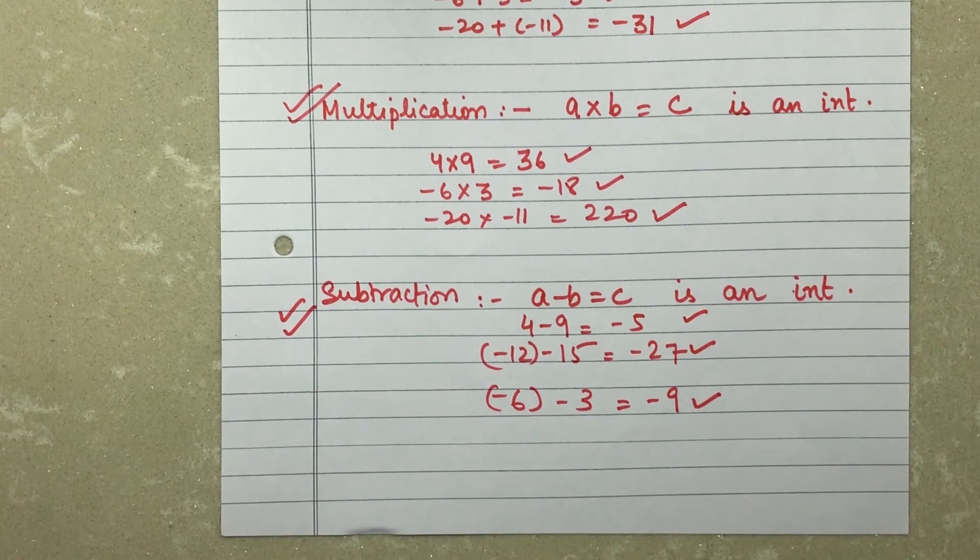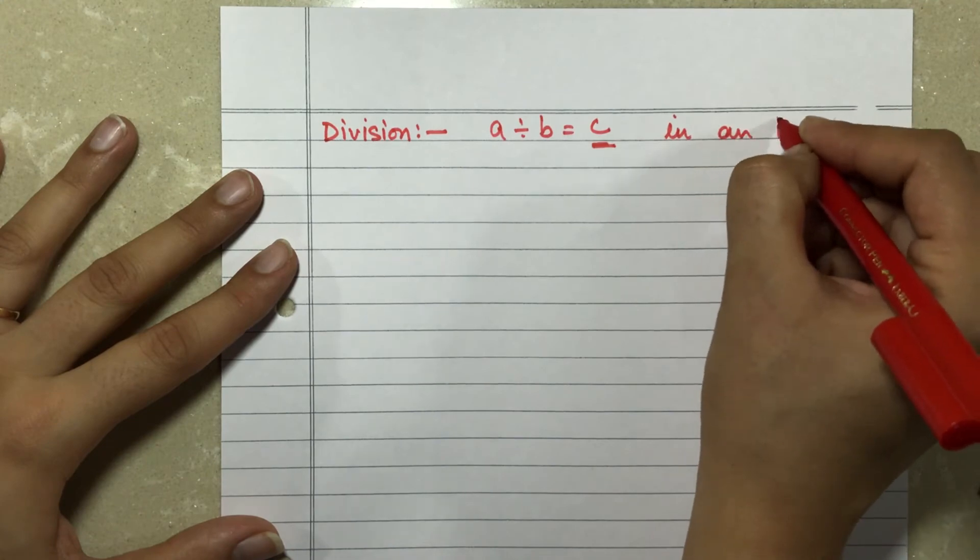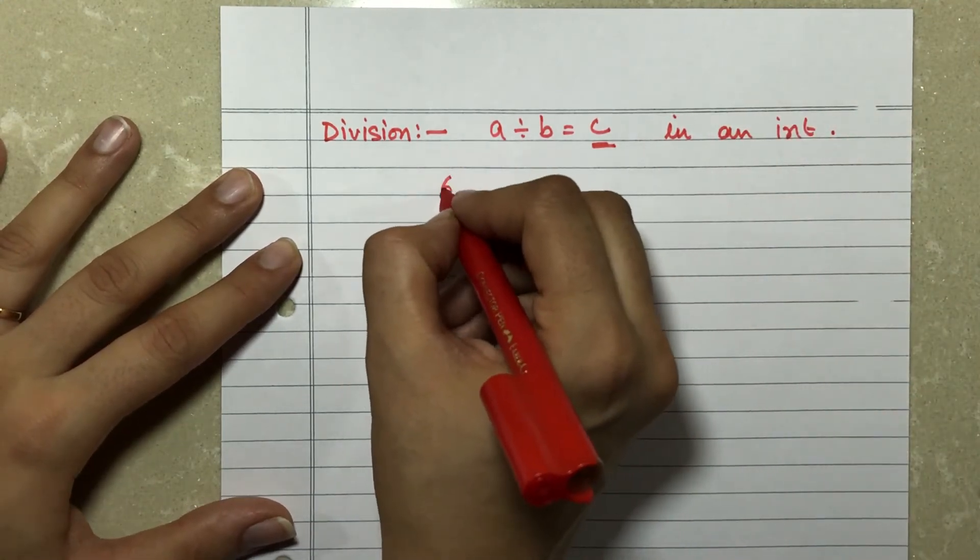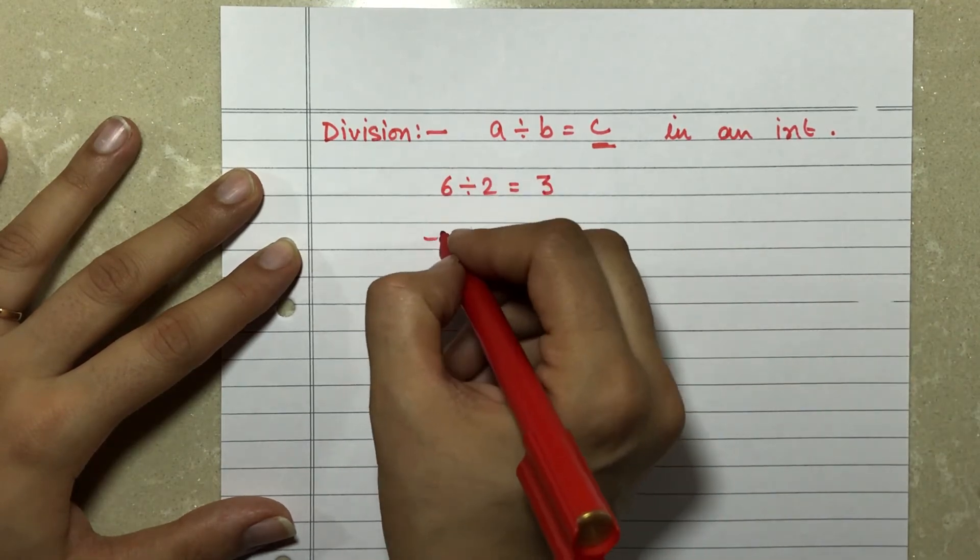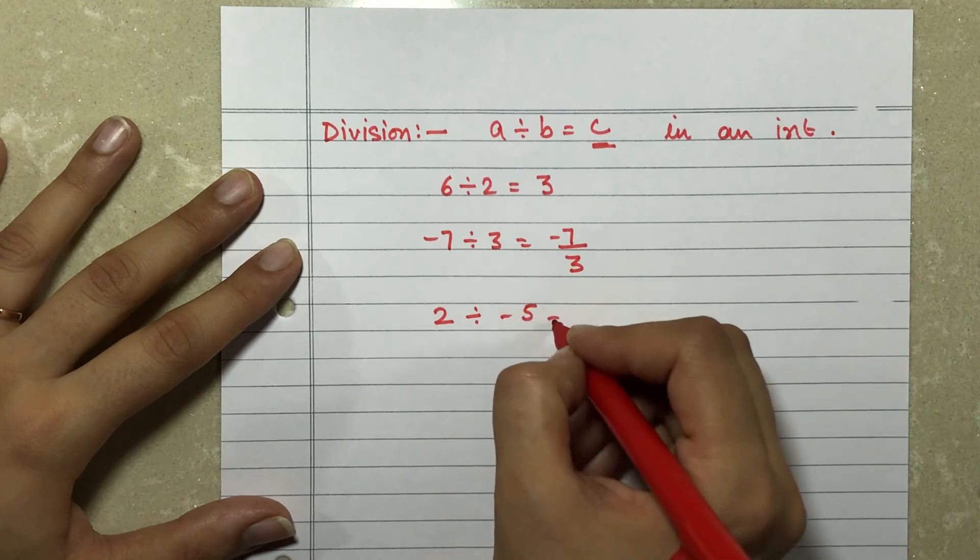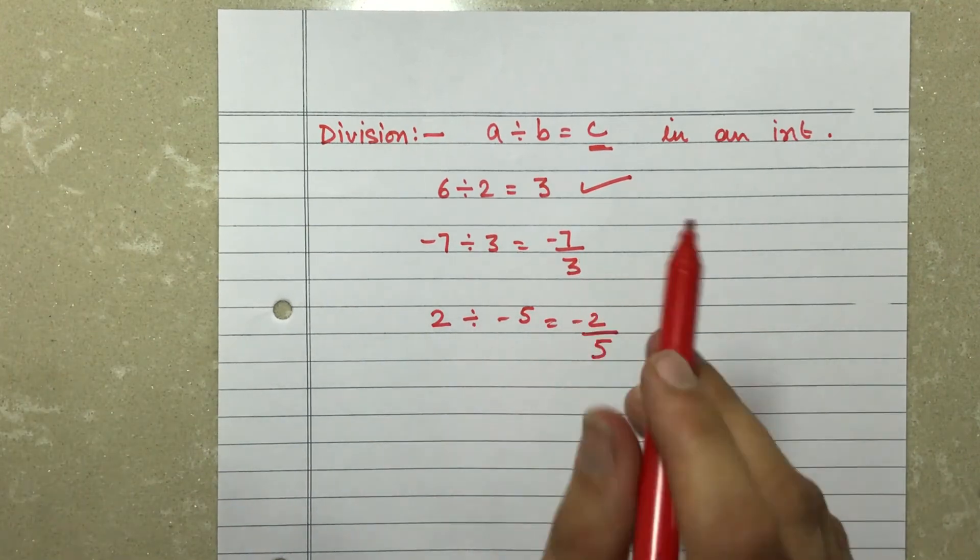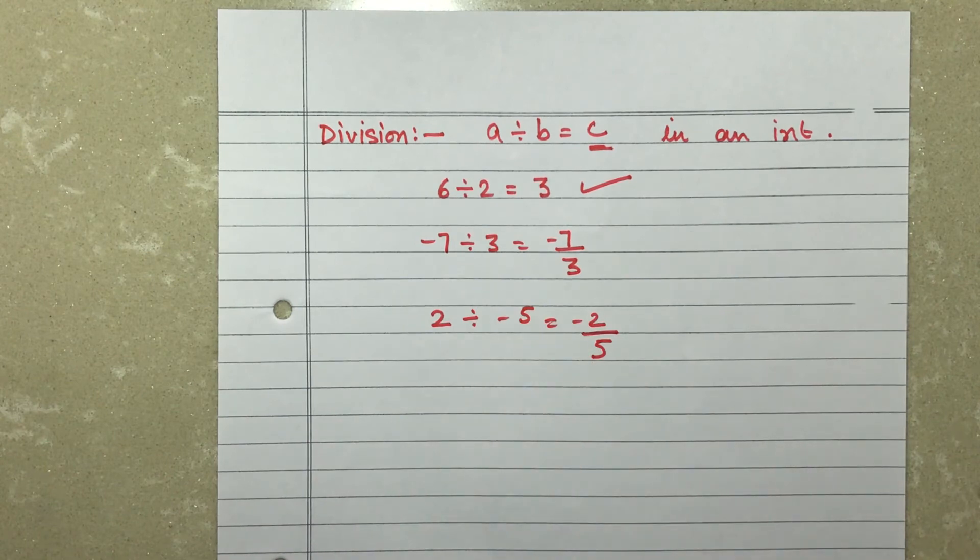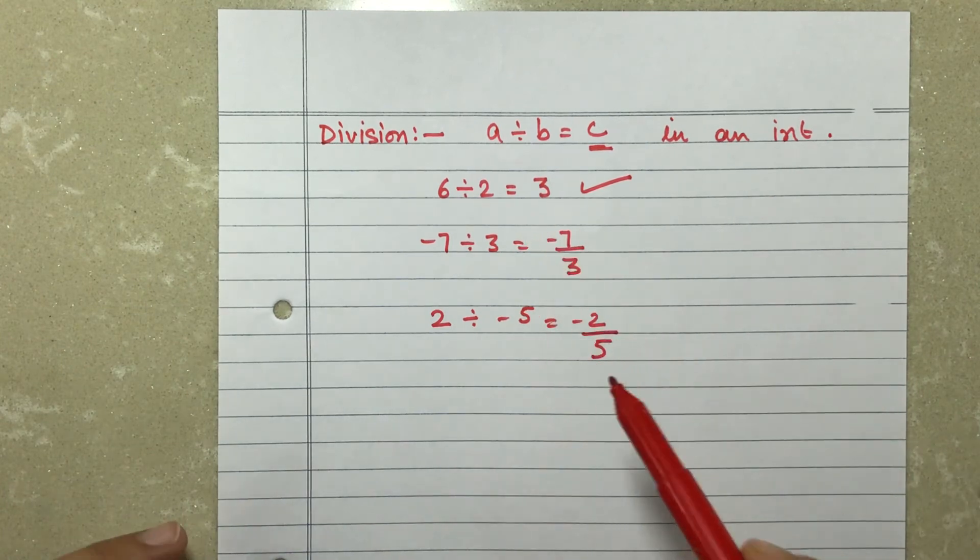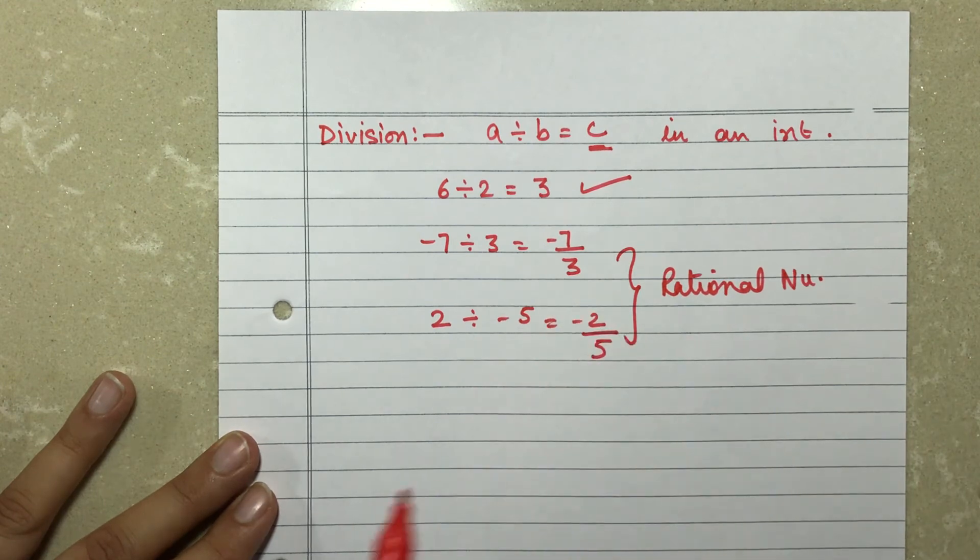Last is division. Let's check that out. This is a divided by b. The answer I get, C, should be an integer. Let's check if it is true in the case of division. 6 divided by 2 gives me 3. Minus 7 divided by 3 gives me minus 7 by 3. 2 divided by minus 5 gives me minus 2 by 5. Now 6 divided by 2 gives me 3, and 3 is an integer. But when I see minus 7 by 3 or minus 2 by 5, both these numbers are not integers. They are represented in the form of p by q. Now if they would have been positive, they were fractions. Since they are negative, these are special type of numbers we call them rational numbers. So they are not integers.